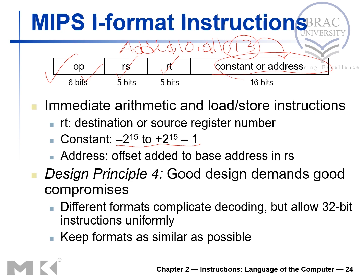In R-type instruction, we have seen that the opcode will be 0, but here the opcode will be other than 0. Now, design principle: good design demands good practice. If you compare R-type instruction and I-type instruction, both of them are 32-bit, which means the designer kept the instruction length the same but changed the fields to represent different instructions.